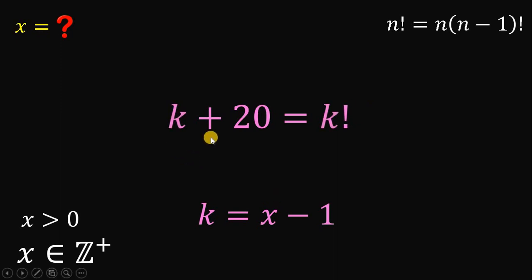So we have now k plus 20 equals k factorial. Now, take note that 20 is between 3 factorial and 4 factorial because 3 factorial is 6 and 4 factorial is 24. So maybe the value of k must be around 3 or 4.